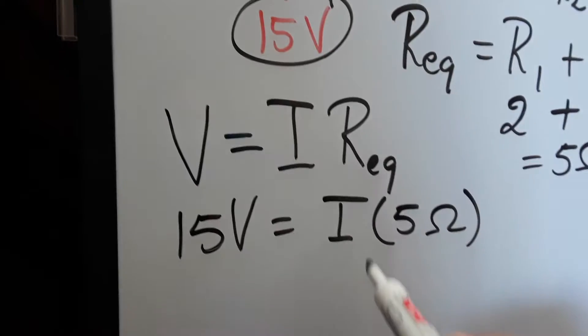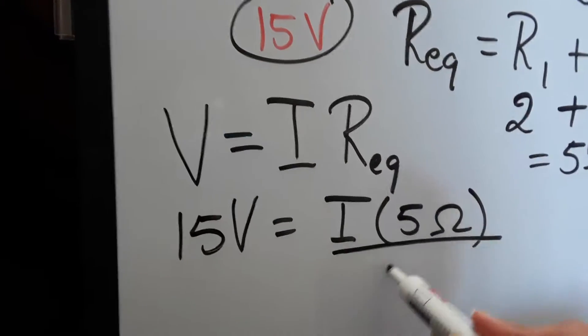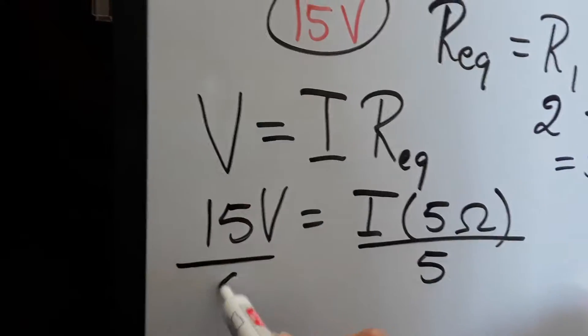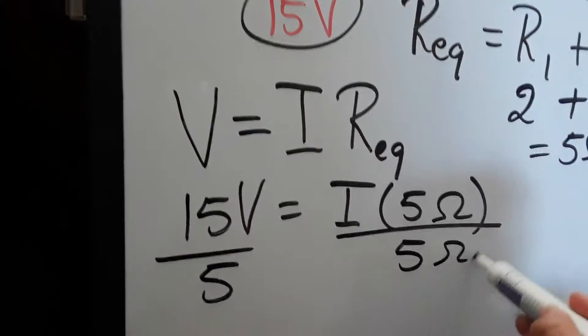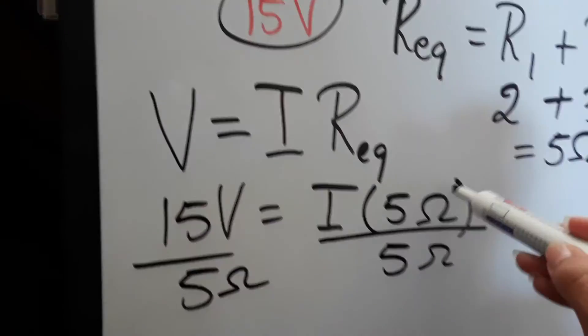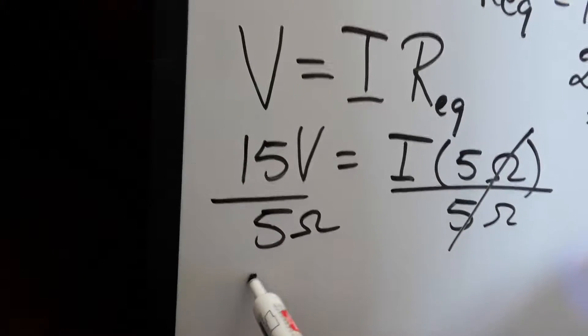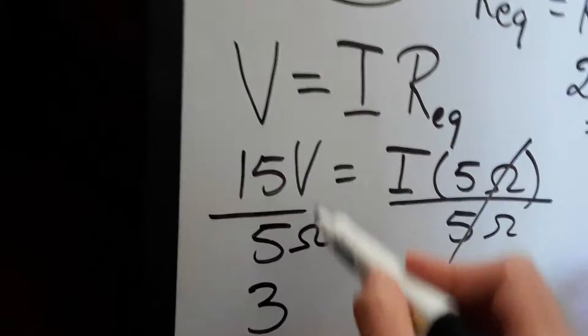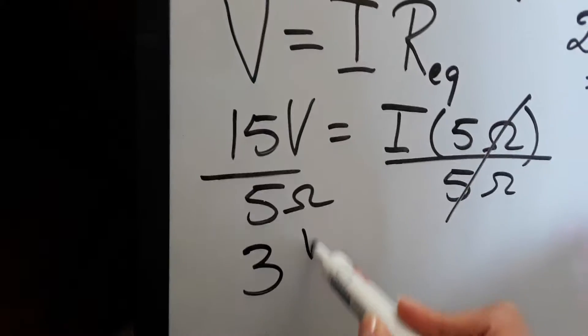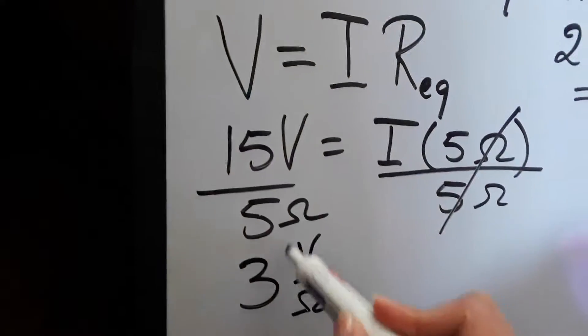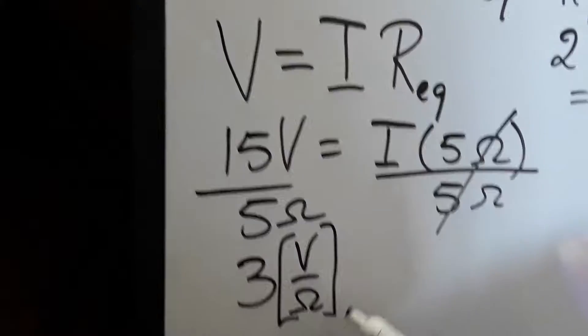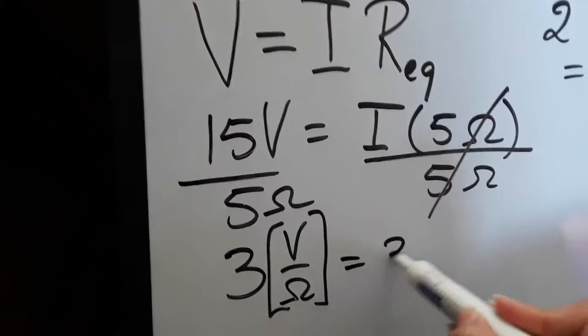Now, how can we solve for I? We can just divide by five, five by five Ohms. Five Ohms cancel out, and now we have 15 divided by five, which is just three. And volts divided by ohms, which is equal to three amps.